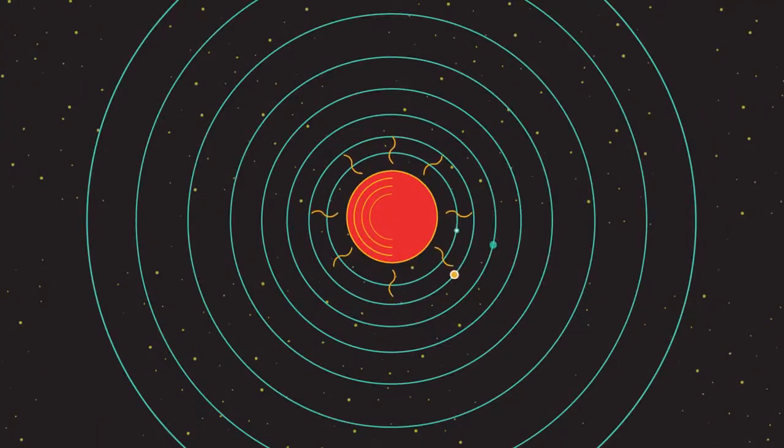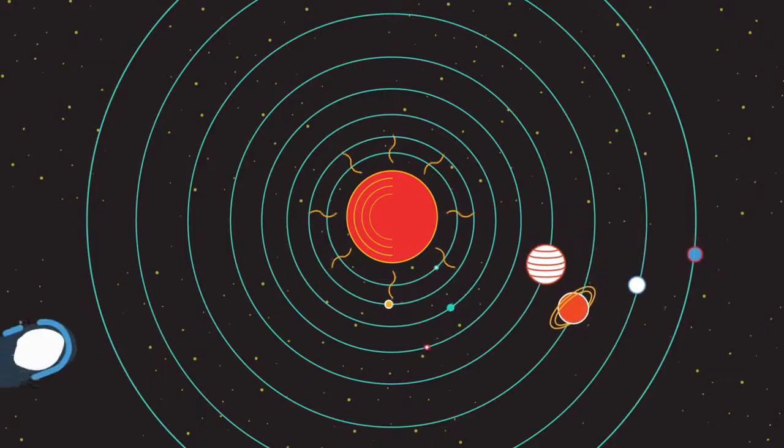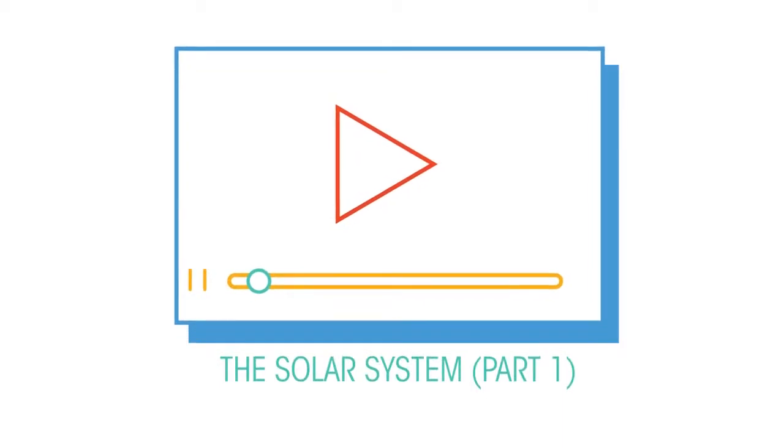This video looks at the characteristics of the outer planets, dwarf planets, moons and comets. To see the review of the inner planets, watch this video.